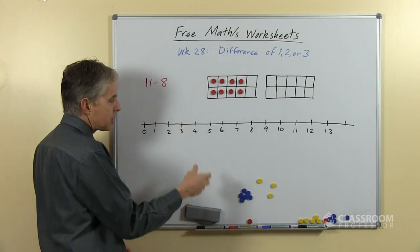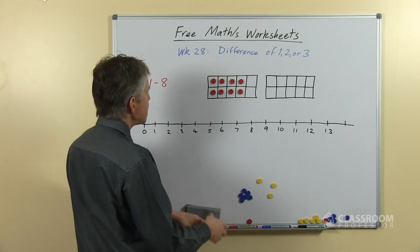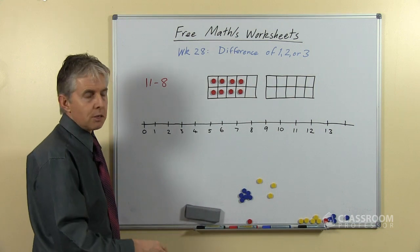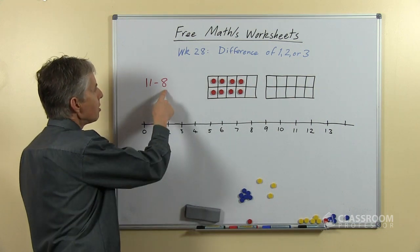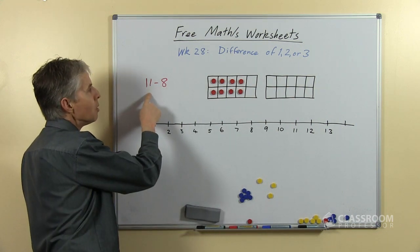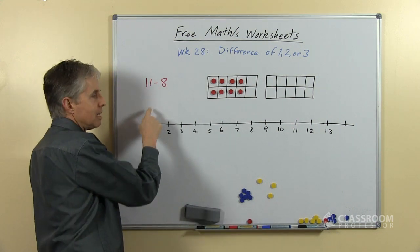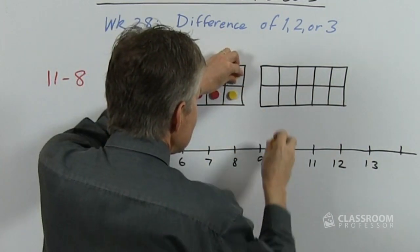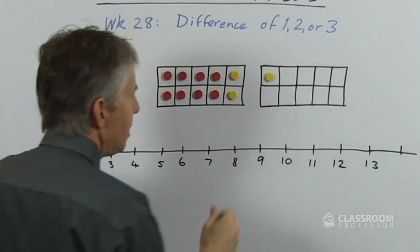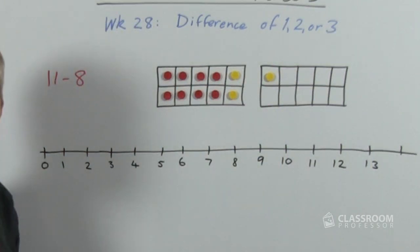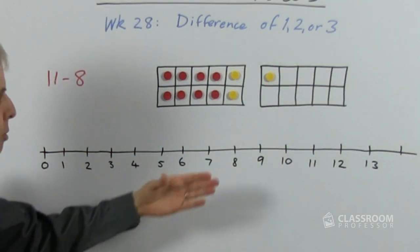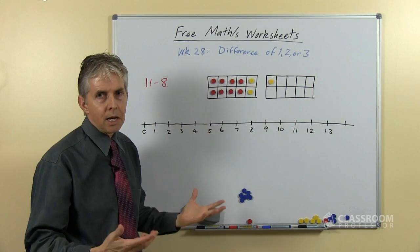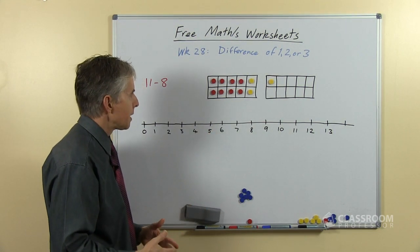With the 10-frame, one approach to this would be: put out 8 counters and then we're going to see how many more there are to make this up to 11. How many more have we added using the second color? And of course we can see it's 3.